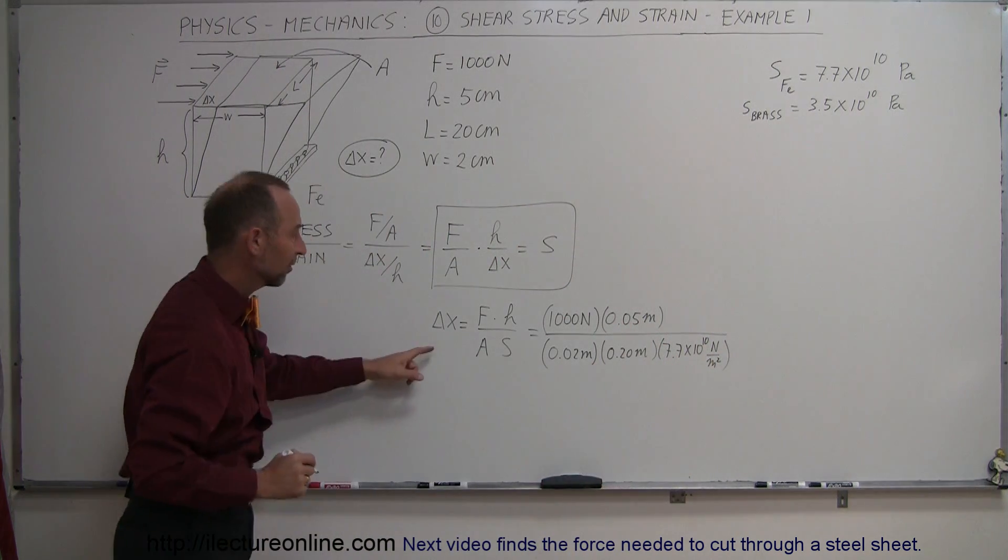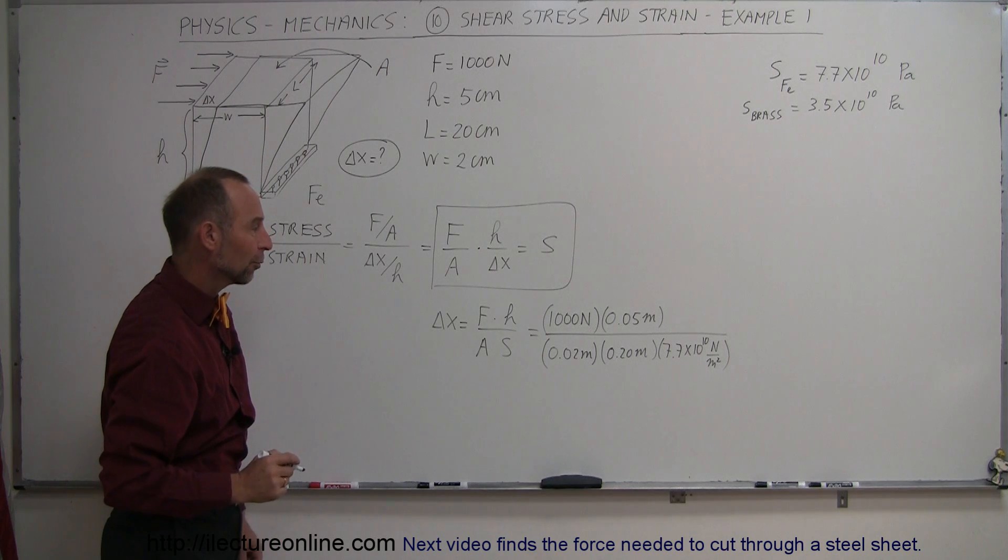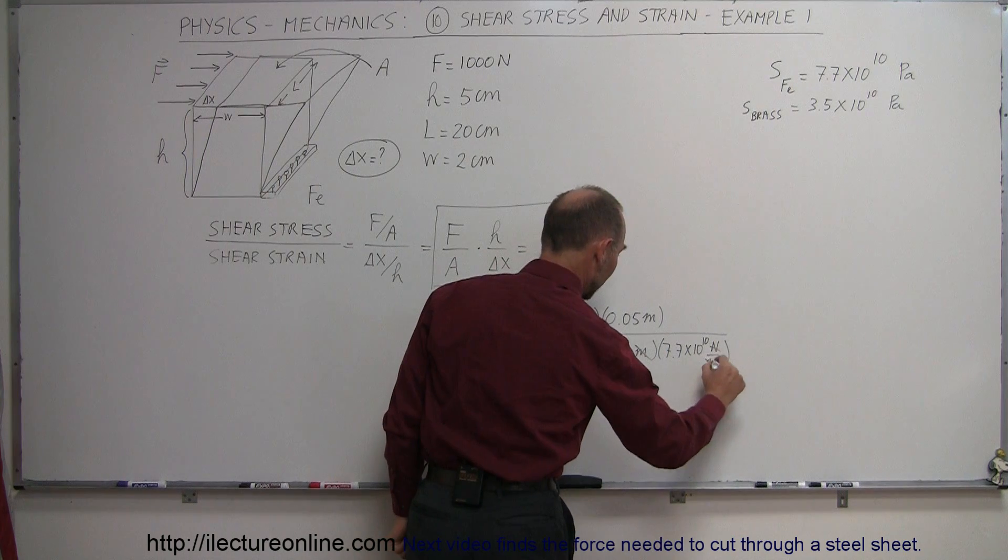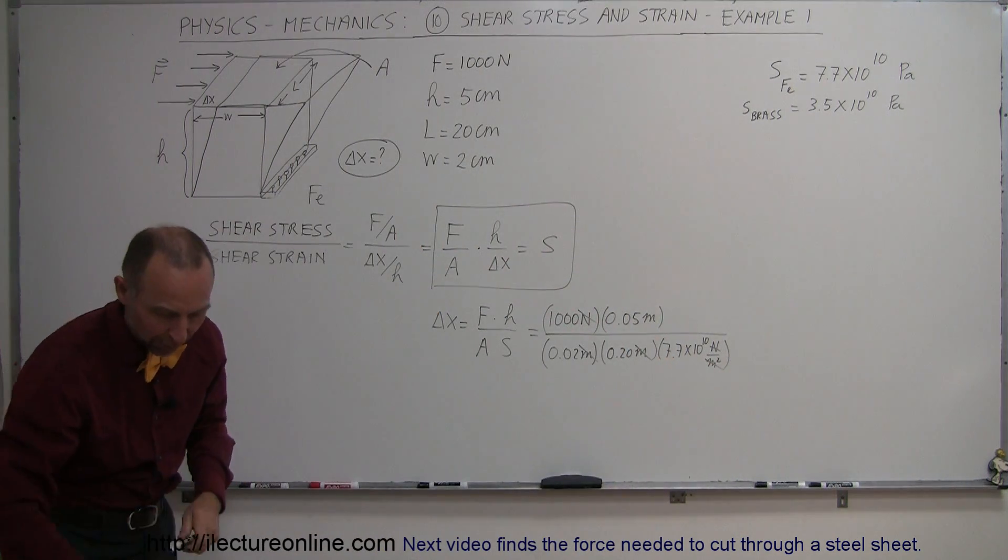All right, when all is said and done, we should have a ratio of, let's see here, meters, because newtons cancel out with newtons, and these meters cancel out with meters squared, so we're just simply left with meters in the numerator.